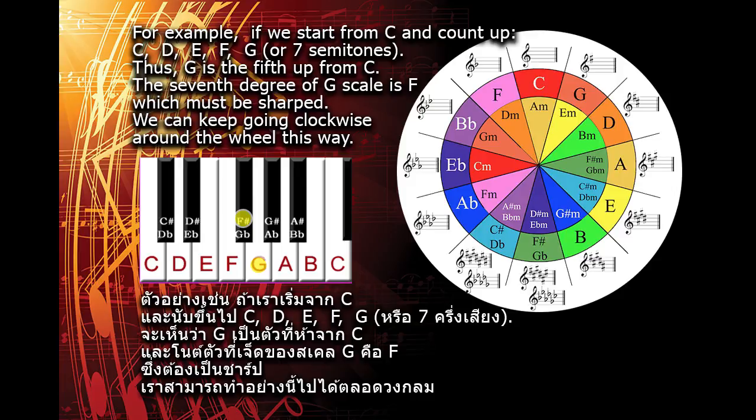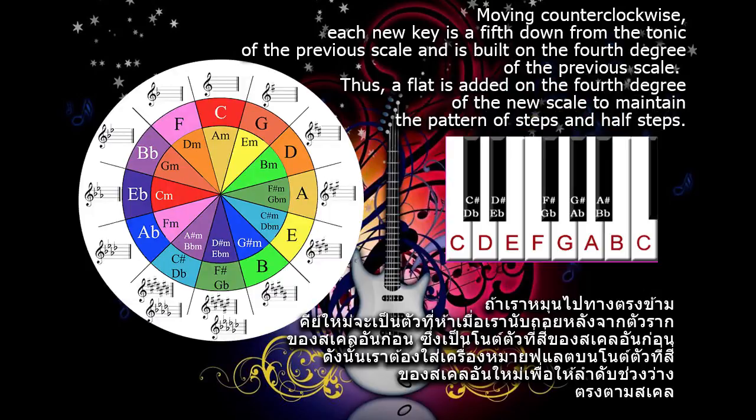We can keep going clockwise around the wheel this way. Moving counterclockwise, each new key is a fifth down from the tonic of the previous scale and is built on the fourth degree of the previous scale. Thus, a flat is added on the fourth degree of the new scale to maintain the pattern of steps and half steps.